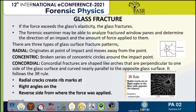Glass responds to any force that is exerted on any one of its surfaces. When the limit of its capacity is reached, the glass fractures. Frequently, fractured window glass will reveal information related to the force and direction of the impact, which may be useful for reconstructing events at a crime scene. Radial cracks originate at the point of impact and move away from that point. Concentric cracks form a broken series of concentric circles around the impact point. Conchoidal fractures are shaped like arches that are perpendicular to one side of the glass surface and curve nearly parallel to the opposite glass surface. They follow the 3R rule: a radial crack creates rib marks at right angles on the reverse side from where the force was applied.